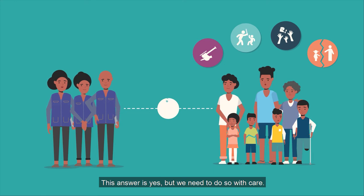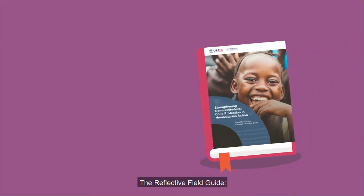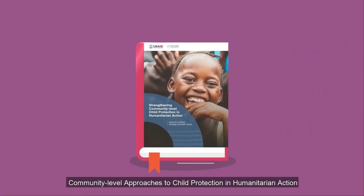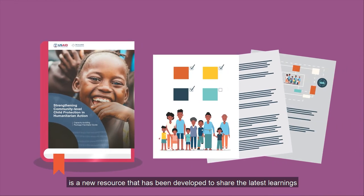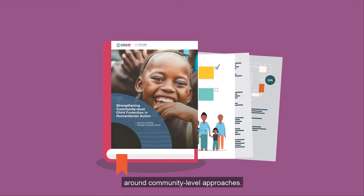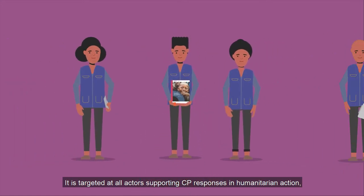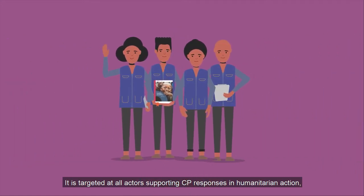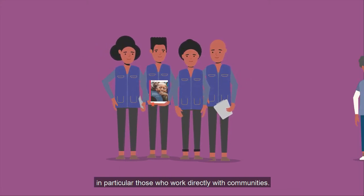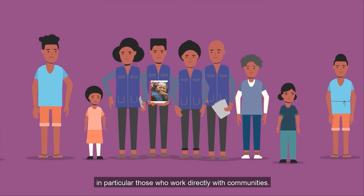The answer is yes, but we need to do so with care. The Reflective Field Guide, Community-Level Approaches to Child Protection in Humanitarian Action, is a new resource developed to share the latest learnings around community-level approaches. It is targeted at all actors supporting child protection responses in humanitarian action, in particular those who work directly with communities.